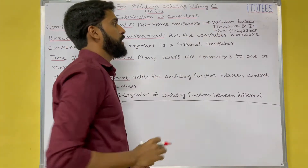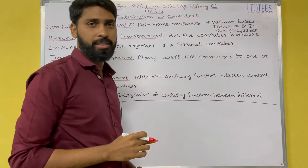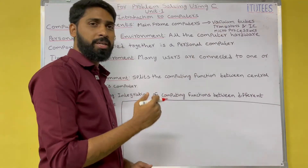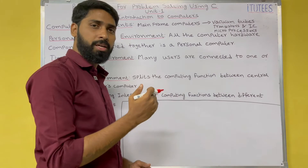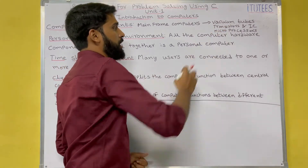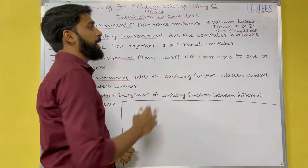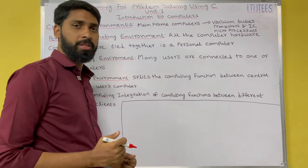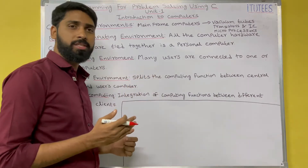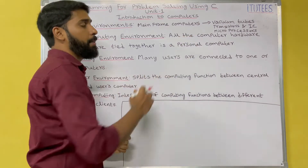In the second generation, vacuum tubes were replaced with transistors and ICs — integrated circuits. Compared to vacuum tubes, transistors and ICs are smaller in size and faster. Then transistors and ICs were replaced with microprocessors. When microprocessors came into the picture, the environment changed, because compared to transistors and ICs, the size was very much reduced in microprocessors.